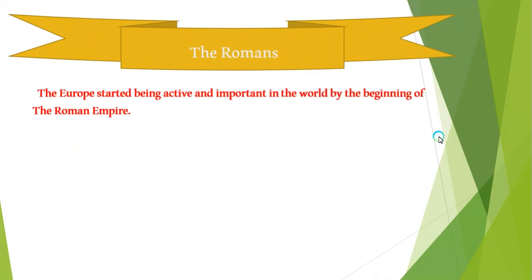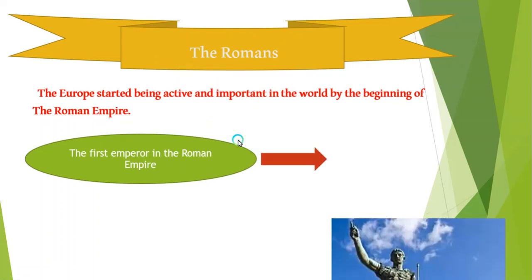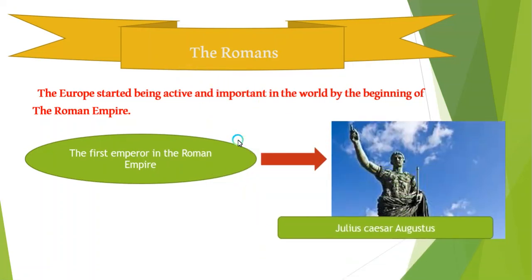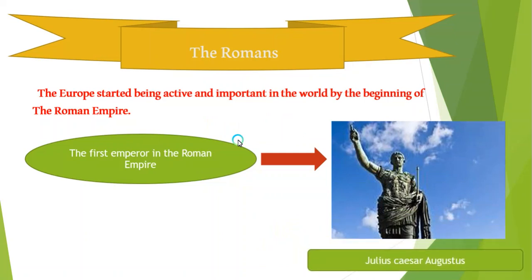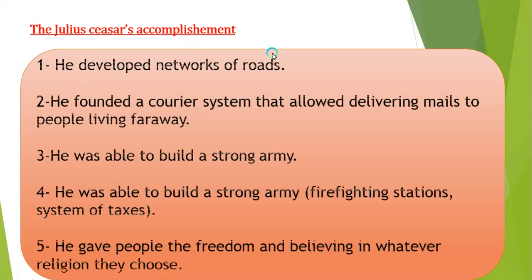Europe started becoming active and important in the world by the beginning of the Roman Empire. The first emperor of the Roman Empire is called Julius Caesar Augustus.